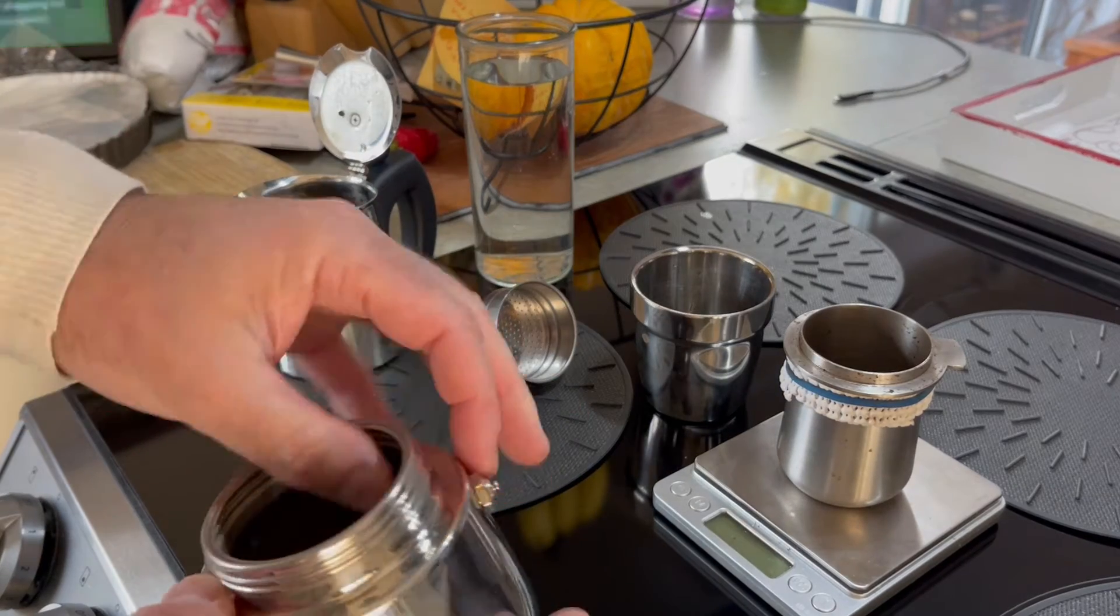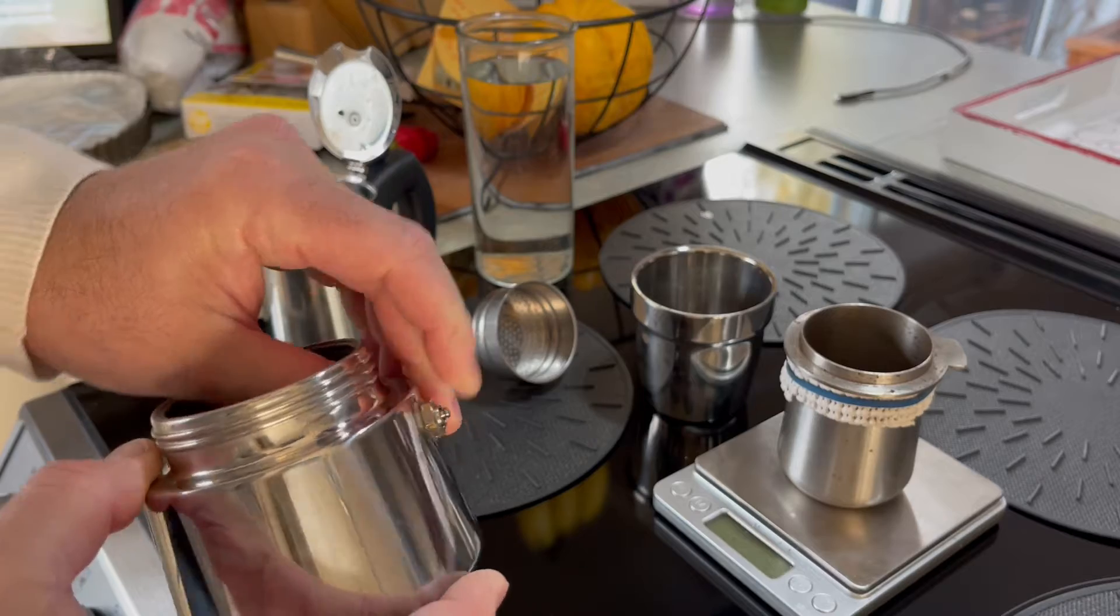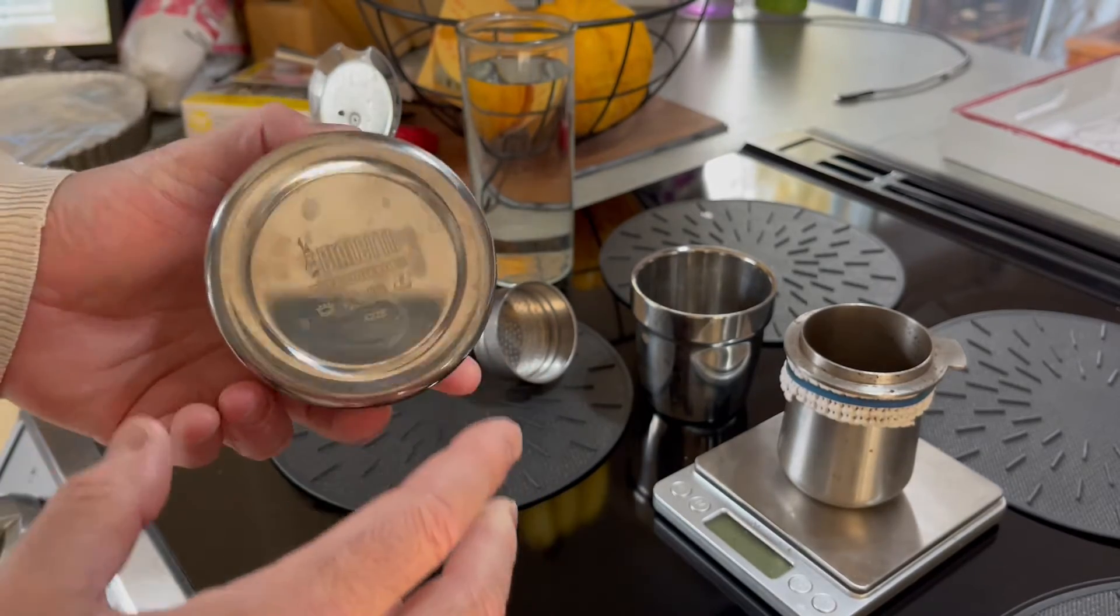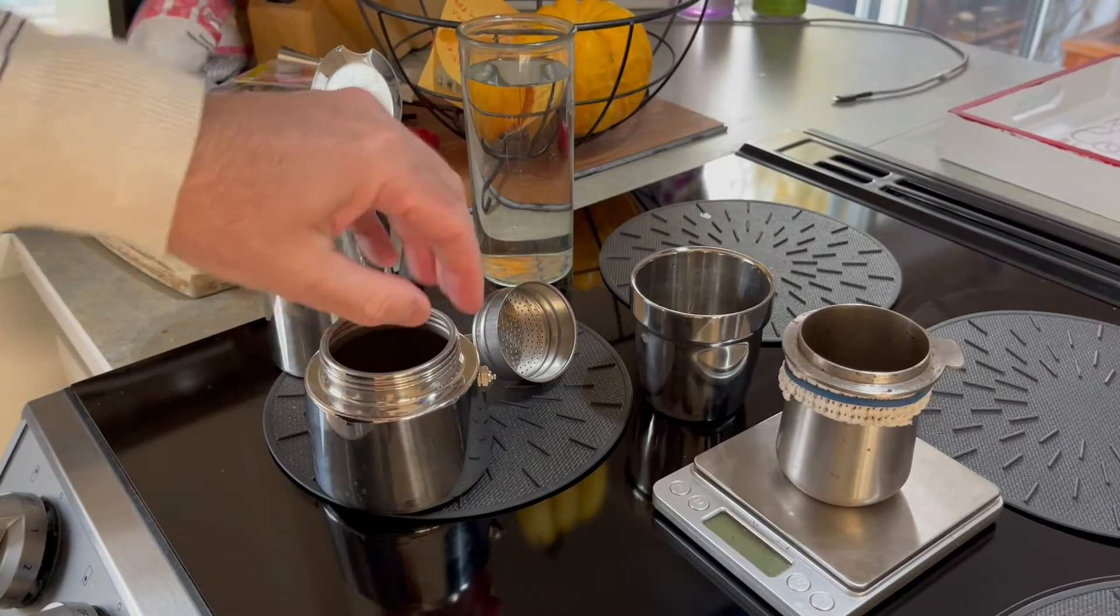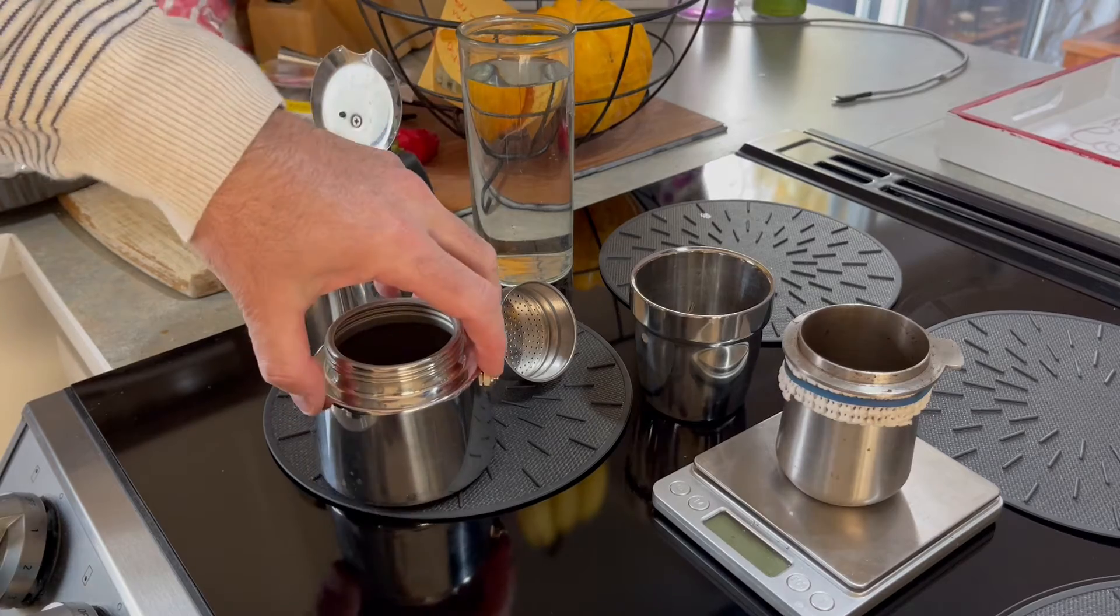On the water chamber, there's a small pressure relief valve. If you over-pressurize this chamber or something gets clogged inside, it will release the pressure here rather than causing it to burst. It's a safety feature.